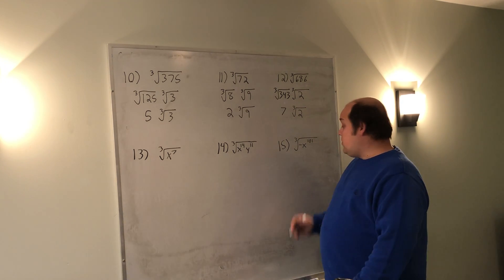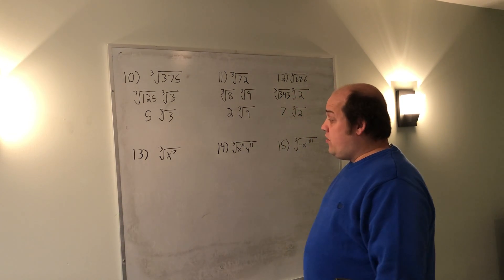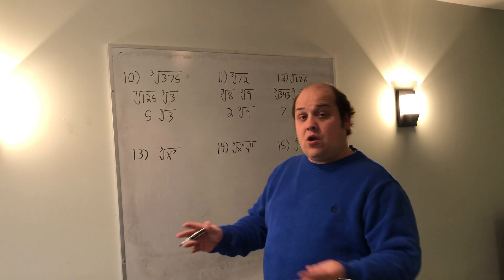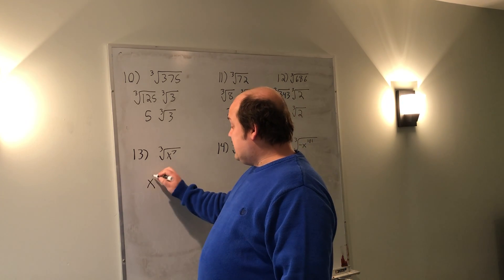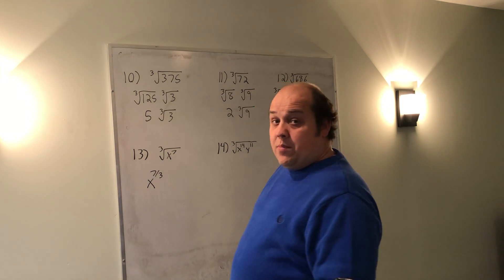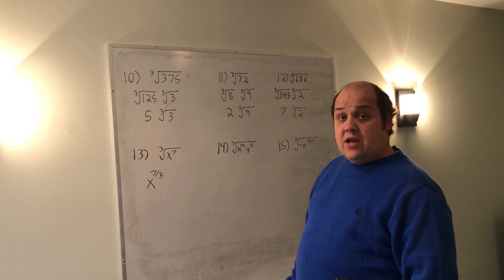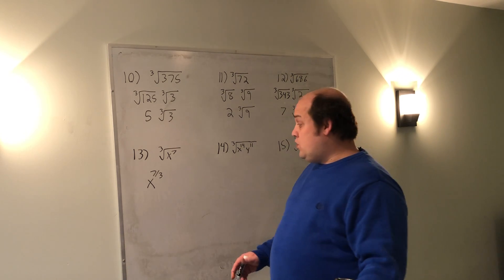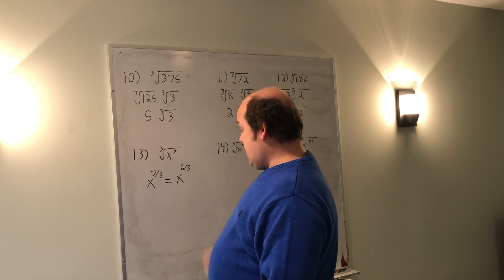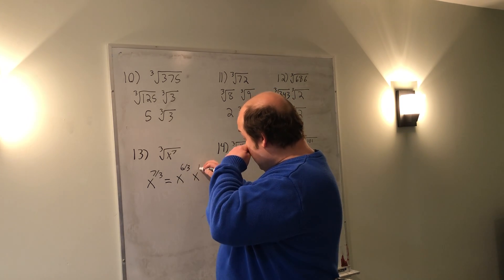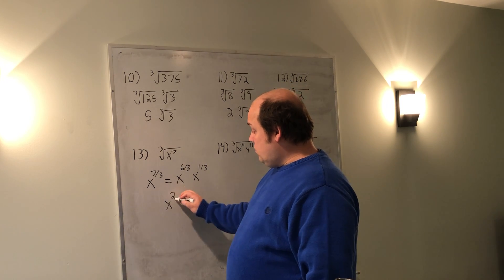This final row is really like things that we've done before, where here we have a cube root with variables under it. We need to figure out how many whole numbers go in and then what's the remainder. So I can write this as x to the 7/3. If I put that in my calculator, I'd see that 7/3 is 2.33, which means it goes in 2 times as a whole number, or x to the 6/3.